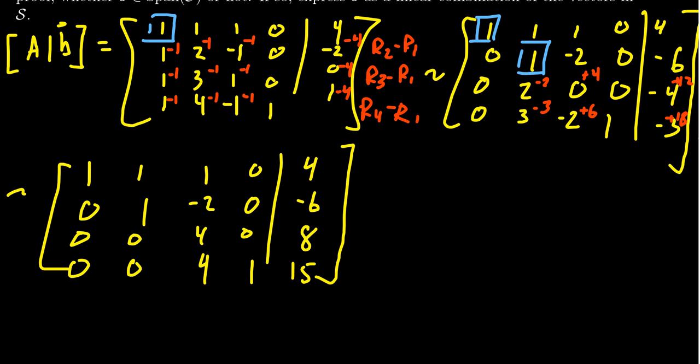Now we see right there. The next thing I want to do is looking at my third pivot position, which would be in the 3,3 spot. I'm going to subtract from row 4, row 3. That'll cancel the 4 that's right here, minus an 8.